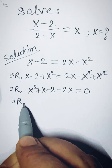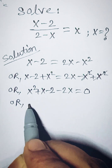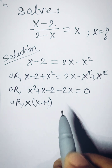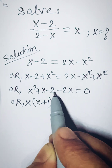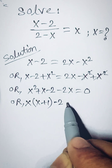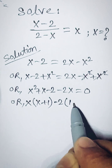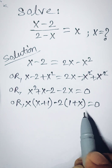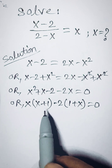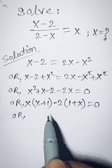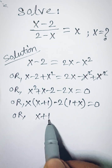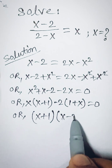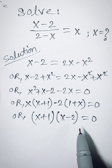Here x is common, so x into x plus 1. Here minus 2 we count minus 2 into 1 plus x is equal to 0. Or x plus 1 multiplied by x minus 2 is equal to 0.